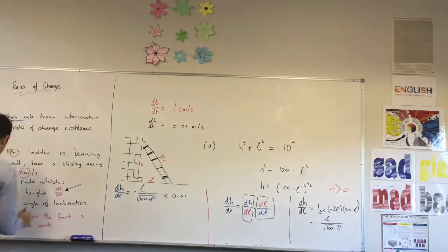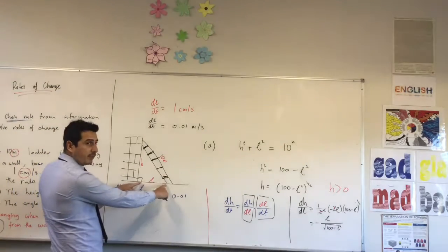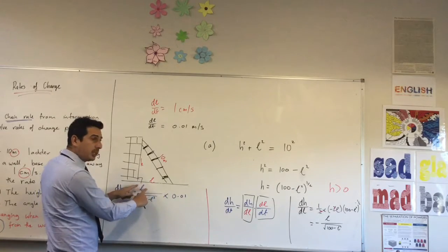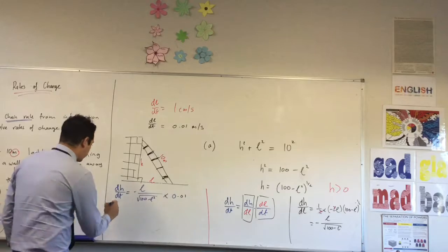Now also, this part in red is for both questions. Find the rate which the height is changing, and that's good because that's a rate it will be changing when the foot is what? Six meters. Our L is our foot, isn't it? So we can substitute in six, and we can substitute in six in here.